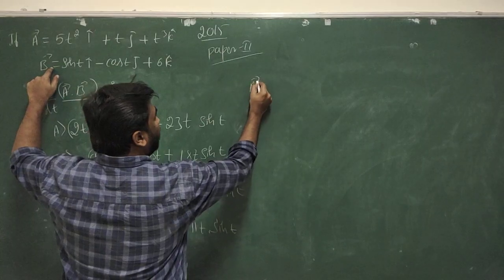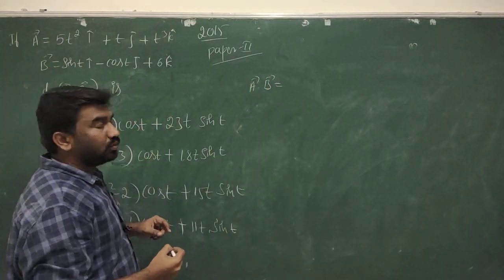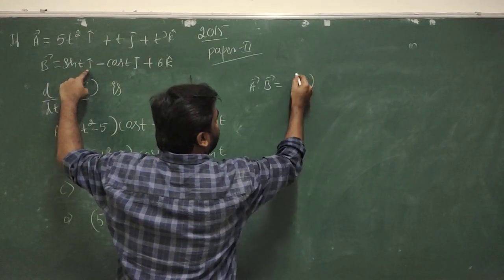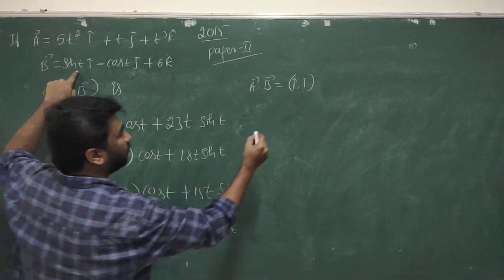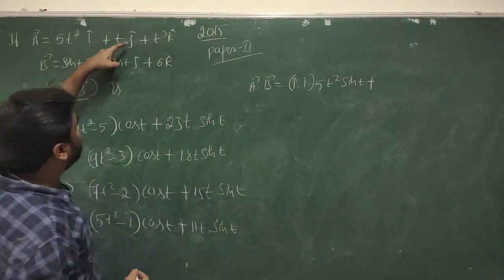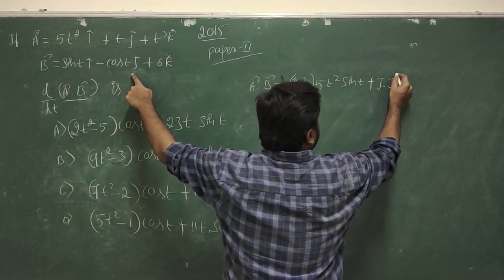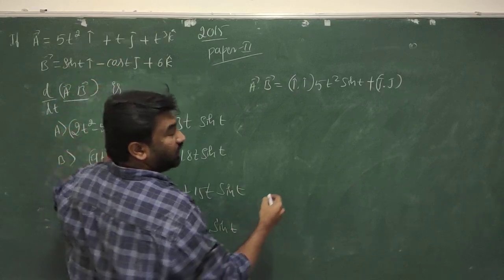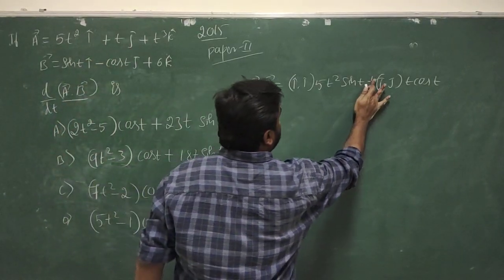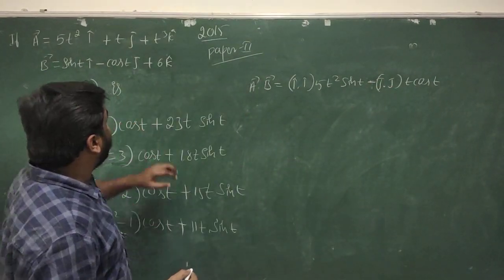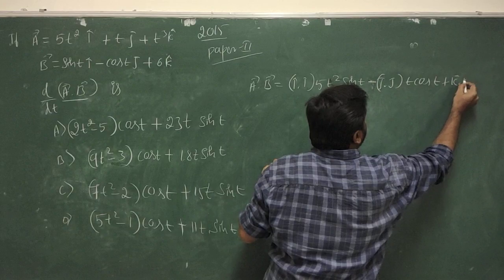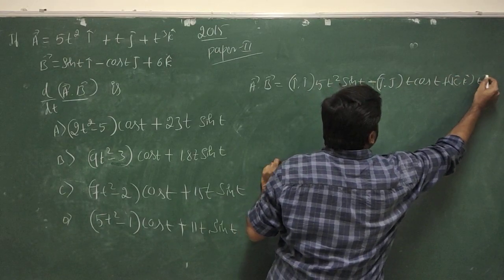Vector a dot b equals: i-cap dot i-cap times 5t² sin(t), giving 5t² sin(t); plus j-cap dot j-cap times t cos(t), but with minus sign it becomes minus t cos(t); and next t³ times 6, from k-cap dot k-cap times 6t³.